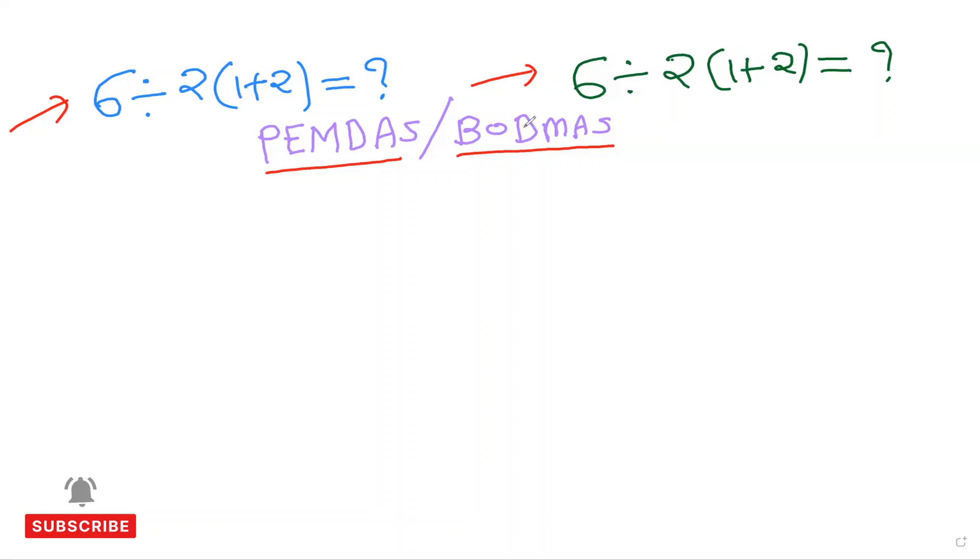Division and multiplication have got equal priority, so whatever comes first from left to right, that's what we are going to operate first. Again, addition and subtraction also have the same priority, whatever comes first from left to right we can do it. So let's get started - why is there a controversy?